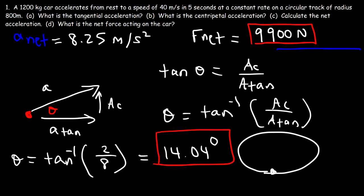So now you know how to find everything needed for problems involving non-uniform circular motion. In non-uniform circular motion, the object is moving in a circle and accelerating at the same time — it's not moving around the circle at constant speed; it's speeding up or slowing down.